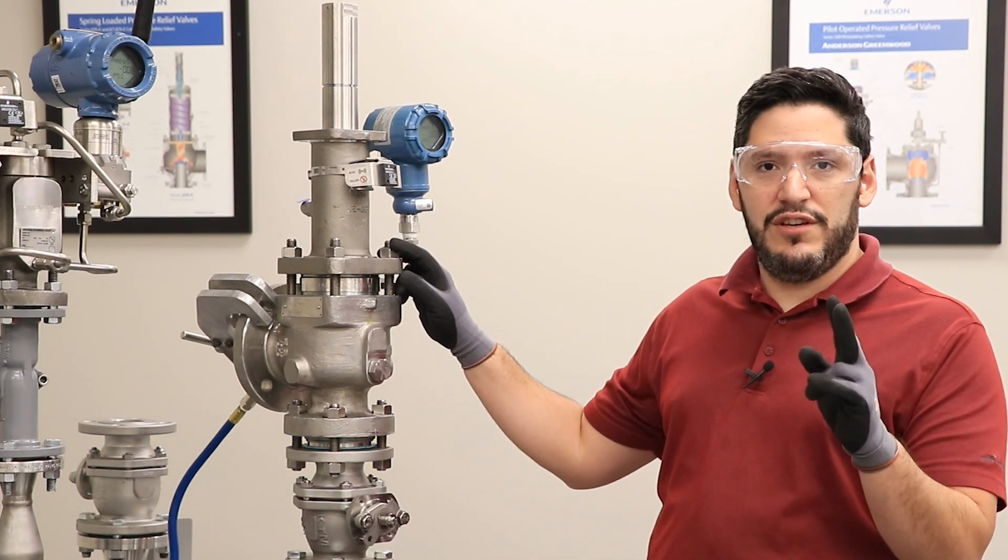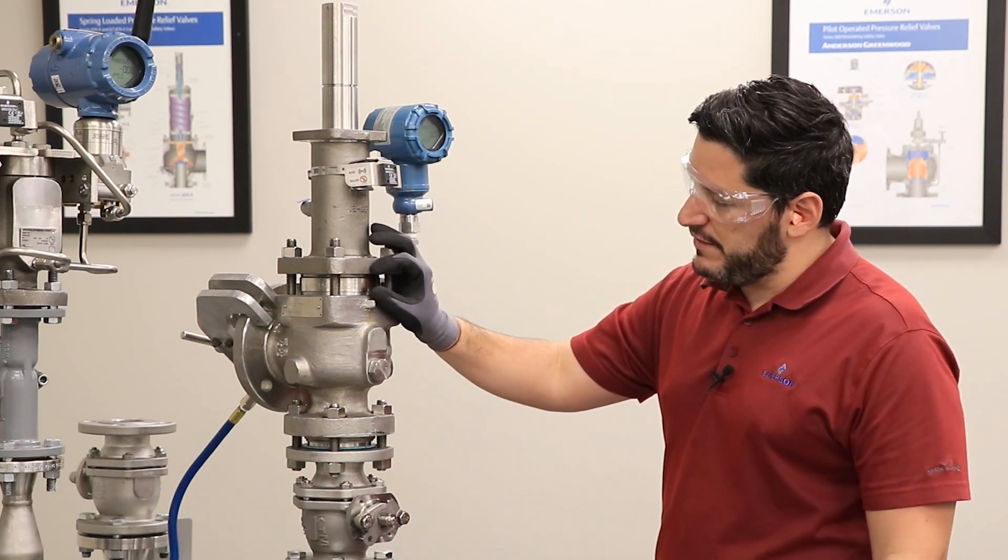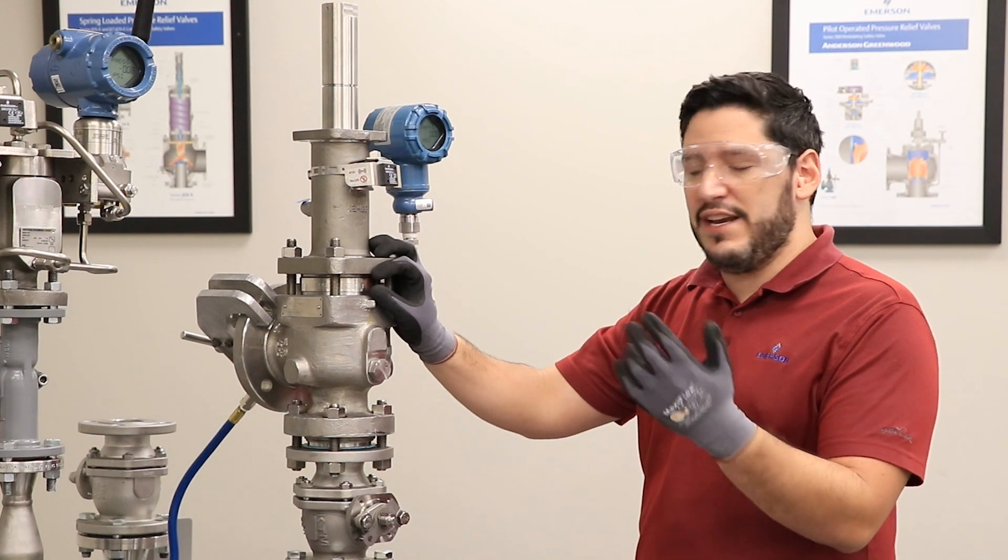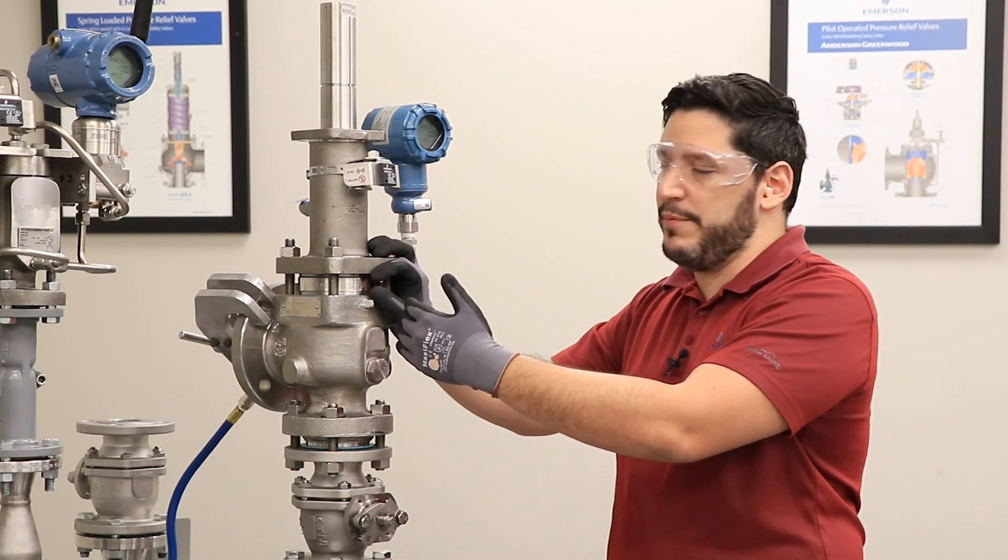Our solution entails two components. The first one is the backup piston. The backup piston ensures that even in the case of a bellows failure, the valve remains balanced against back pressure. It also reduces the fugitive emissions through the bonnet vent by up to 90%.